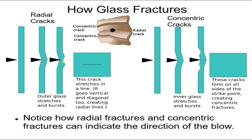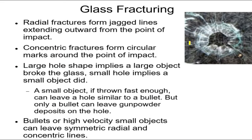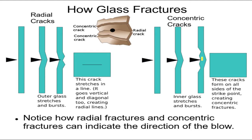Notice that when the object hits and bulges out one side, on the impact side it pushes in — which means it pulls the glass on the side of the point of impact. It pulls the glass away from the surrounding glass, actually causing a break on both sides. Since this pulling force acts toward the center from all sides, it forms what we call concentric fractures — circular fractures all around the center.